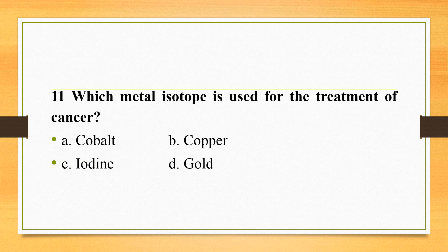Which metal isotope is used for the treatment of cancer? The answer is cobalt. Iodine and its isotopes are used for the treatment of thyroid disease.